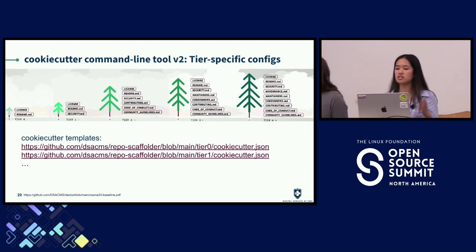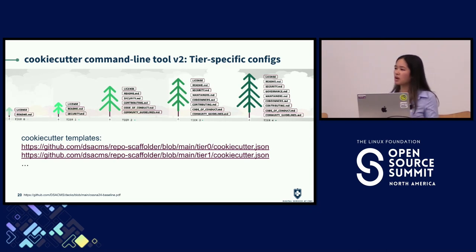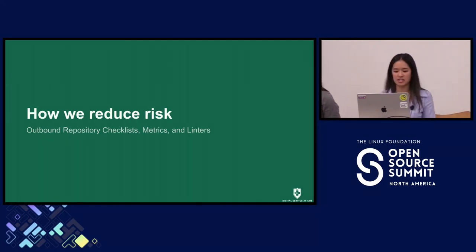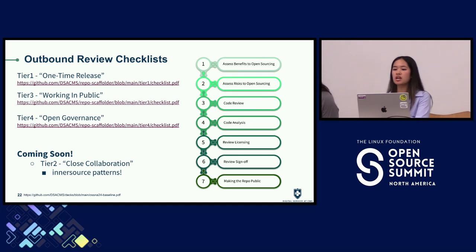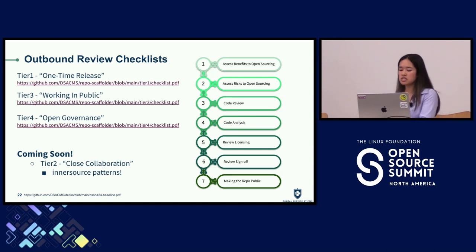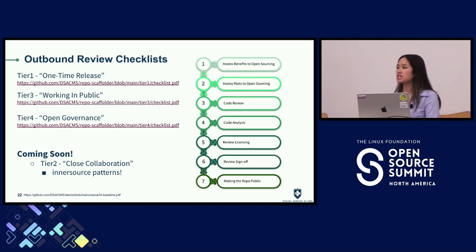The tool also has functionality to upload and create a repository on GitHub.com if the user has a GitHub token and the necessary permissions. Overall, by having our maturity model framework and these tools, we're able to reduce duplicate work for projects going forward by having a baseline that all project teams can start from. Our next section covers how we reduce risk through our outbound checklist, metrics, and linters. For outbounding, we have a review process for private projects that would like to be released as open source, with seven core steps.